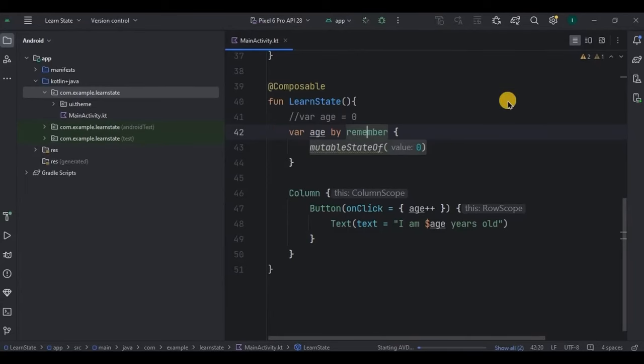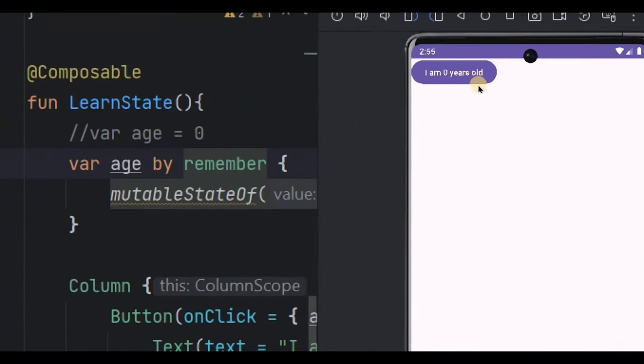Now let's run the app and see. Here I will click on the button and look, the age is getting incremented and also it's visible on the button itself. Amazing, right?